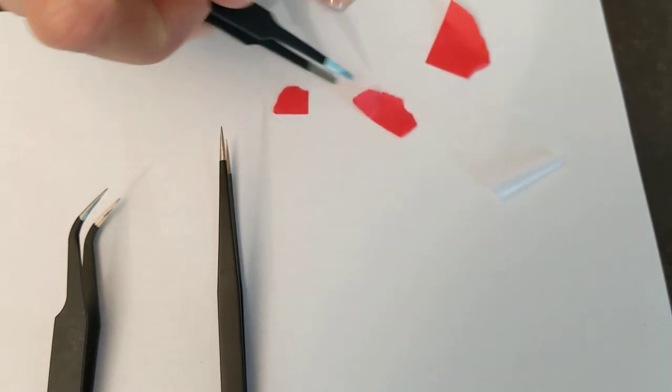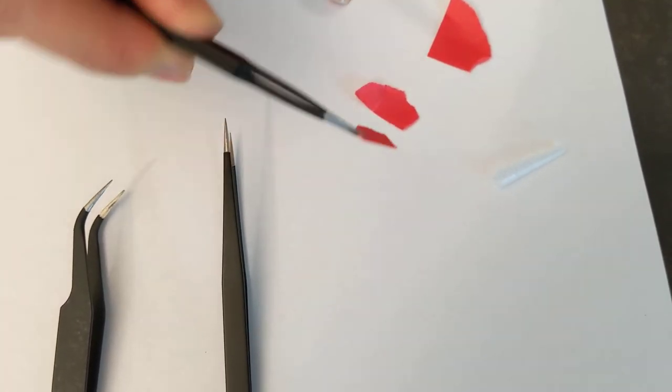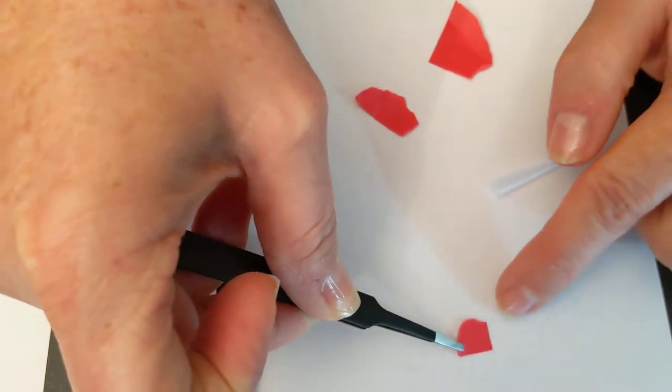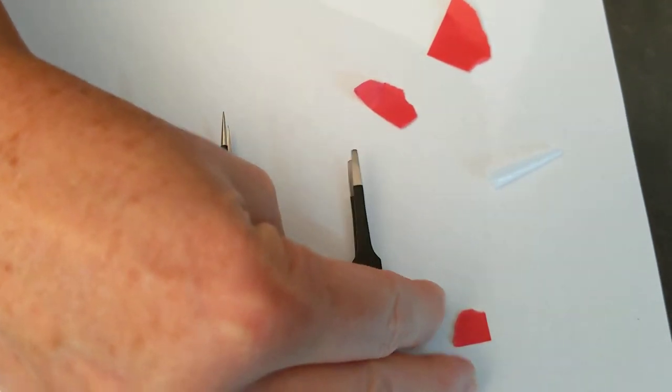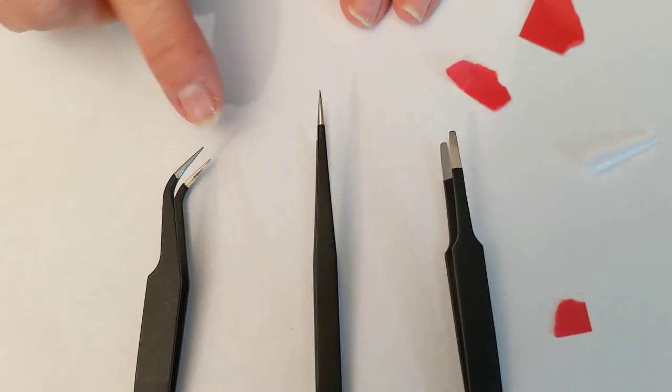So it allows you to pick up anything just as easily as the point does and all they are is just preference. A duck bill, precision point which would be straight or a curved point.